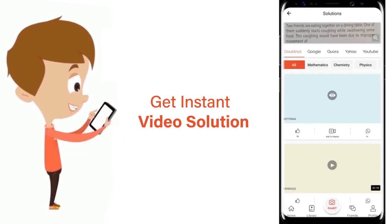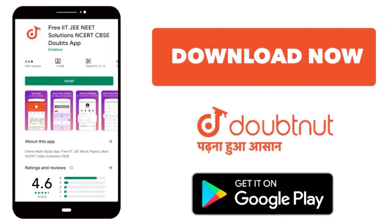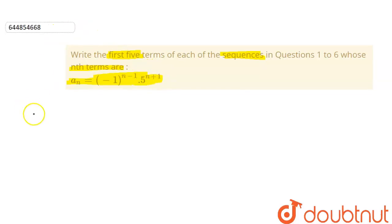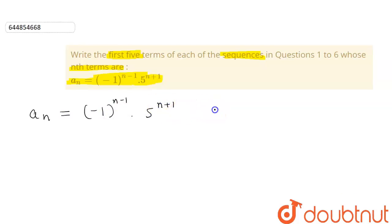The question is to write the first five terms of the sequence whose nth term is: aₙ = (-1)^(n-1) × 5^(n+1). From the question, we are given the value of aₙ = (-1)^(n-1) × 5^(n+1), where n is the number of the term and n belongs to the natural numbers.